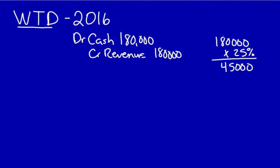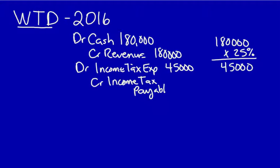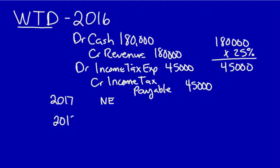Let's do the entry they would have had to do: debit income tax expense $45,000, and credit income tax payable $45,000. Now, I am in 2019, so I want to look at 2017 — there would be no entry. Think forward, don't be short-sighted. 2018, no entry. And we're sitting in 2019. So I've got the full impact of this error. I'm looking at what they did, not what I'm supposed to do to correct it — what they actually did in 2016, 2017, and 2018.